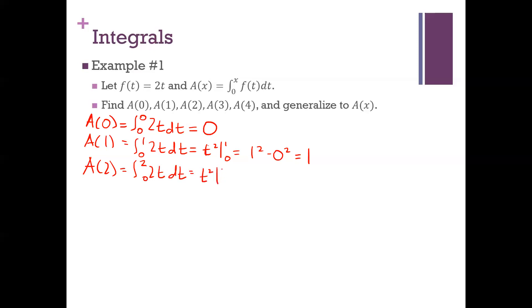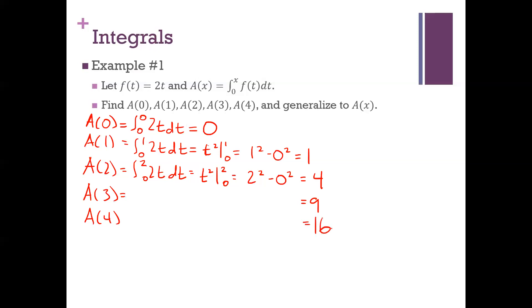The anti-derivative is going to be the same every time — what we're varying is just the right endpoint of this interval. If you want to go through the integration definition for x equals three and x equals four, you'll see that the integration process delivers 9 and 16. I'll just give you that those values are 9 and 16.